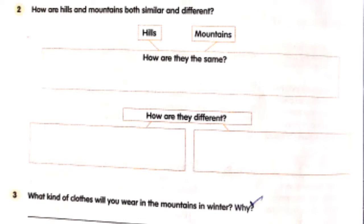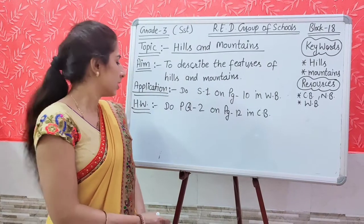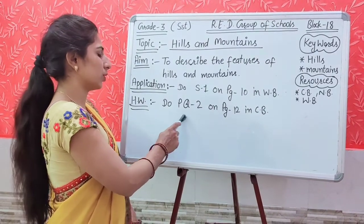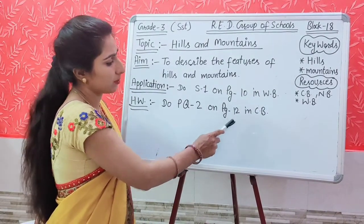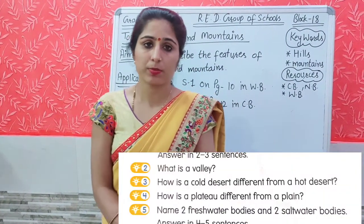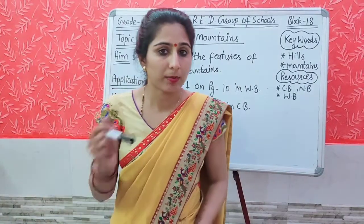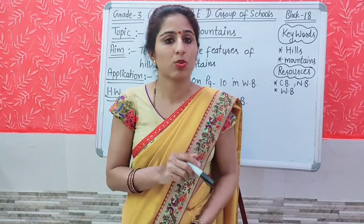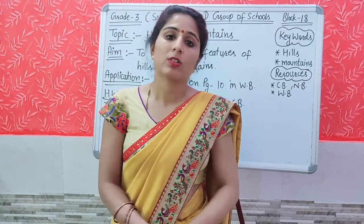Question 3: What kind of clothes will you wear in the mountains in winter, and why? In winter the weather would be extremely cold, so write your answer accordingly. This is your today's homework: do practice question number 2 on page number 12 in your content book — What is a valley? The lowland area between two hills or mountains is called a valley.